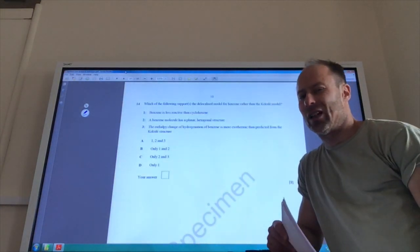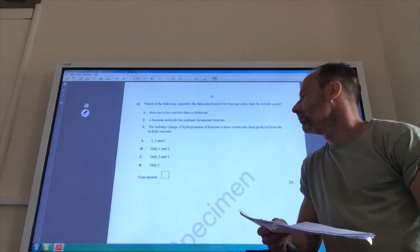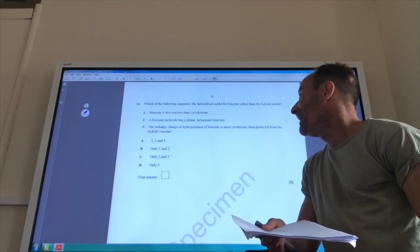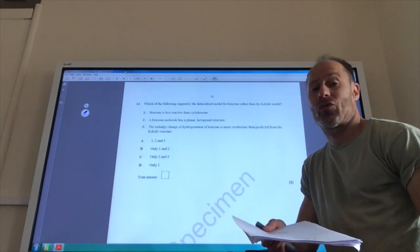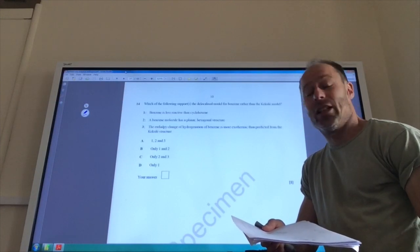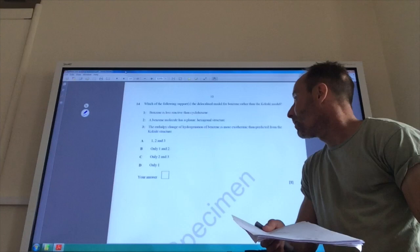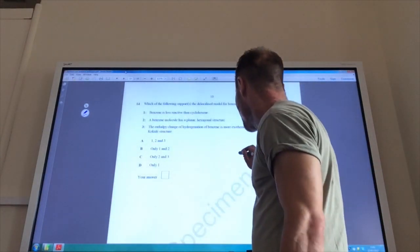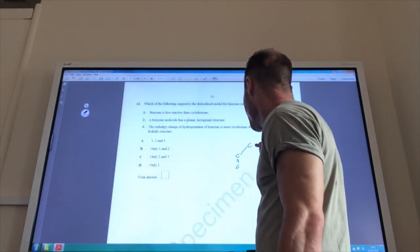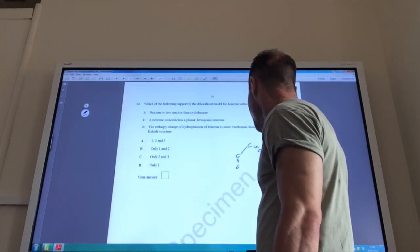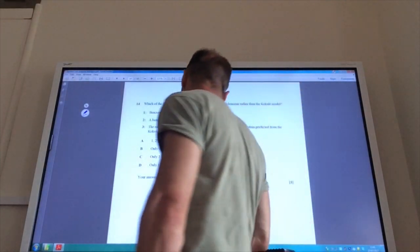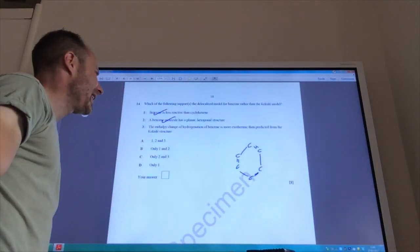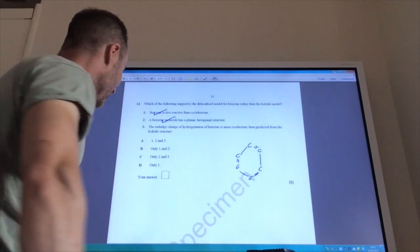Okay, for this next one, I'm going to disagree with the mark scheme. And I'll explain why. So, which of the following supports the delocalized model for benzene rather than the Kekulé model? Benzene is less reactive than cyclohexene. So, yeah, that's right. That does support the delocalized model for benzene. A benzene molecule has a planar hexagonal structure, which it does. If you look at the Kekulé model, you would expect it to not really be planar because your double bonds are going to be shorter than your single bonds. So, it would be a very distorted molecule. So, I think that the enthalpy change of hydrogenation of benzene is more exothermic than predicted. It's actually less exothermic than predicted. So, that one's not right. So, I'm going to say the answer to 14 is B.